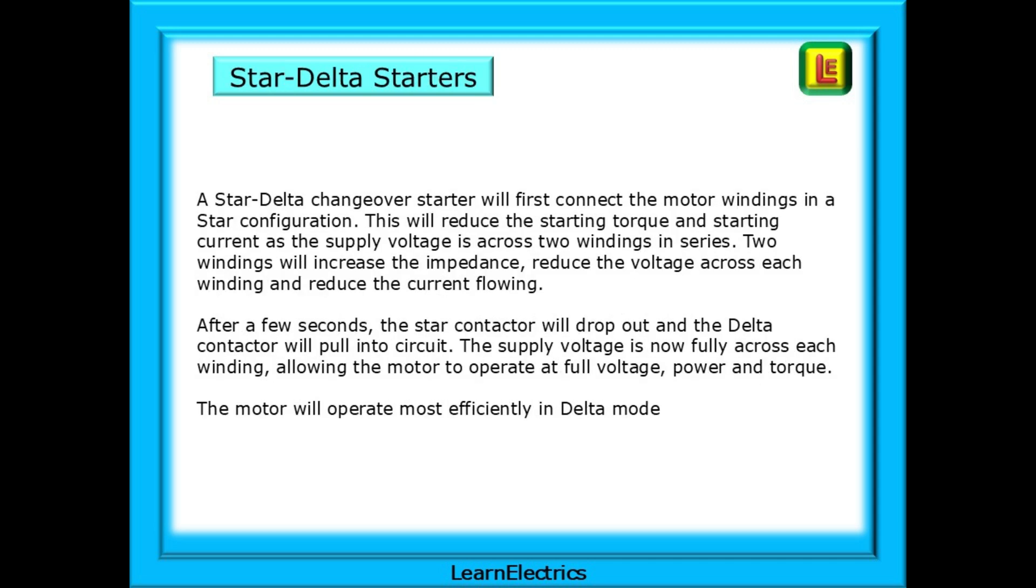A star delta starter will first connect the motor windings in a star configuration. This will reduce the starting torque and starting current as the supply voltage is across two windings in series. Two windings in series will increase the impedance, reduce the voltage across each winding, and reduce the current flowing. After a few seconds, the star contactor will drop out and the delta contactor will pull into circuit. The supply voltage is now fully across each winding, allowing the motor to operate at full voltage, power, and torque. The motor will operate most efficiently in this delta mode.